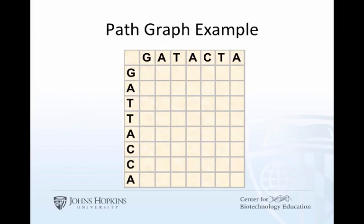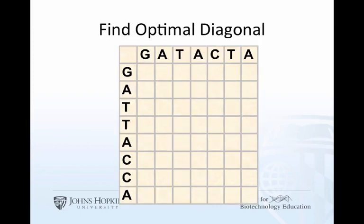First thing we do is draw a graph, actually more of a grid on simple graph paper. And on one axis we put one sequence, and on the other axis we put the other sequence. And our goal is to find the best path, beginning in the upper left and ending in the lower right at the end of the sequence.